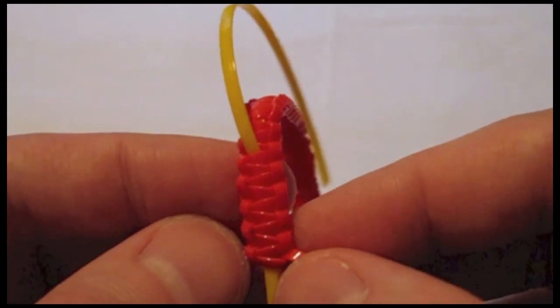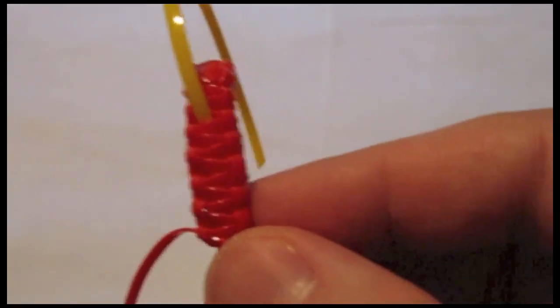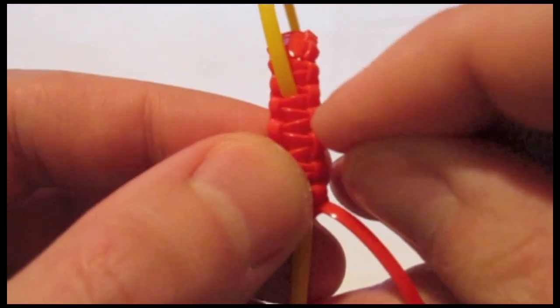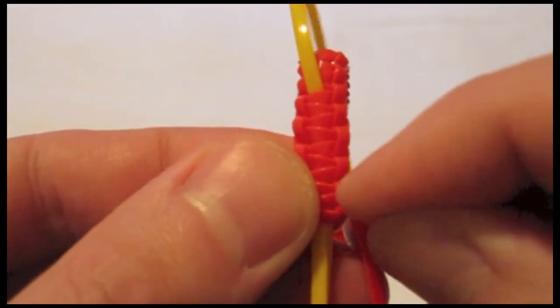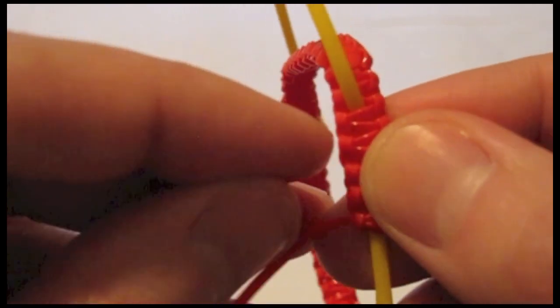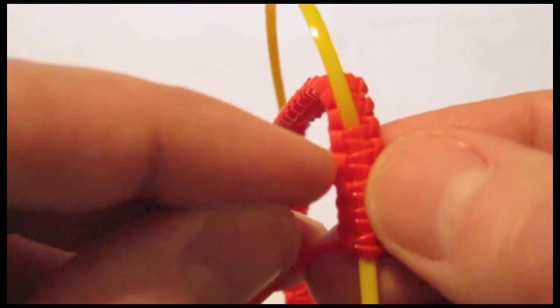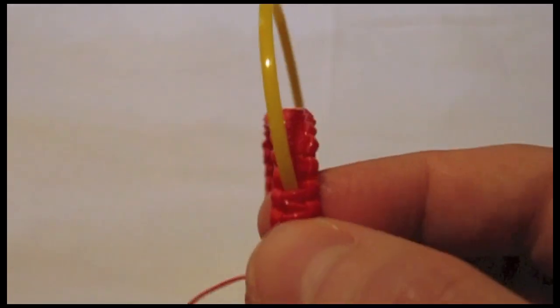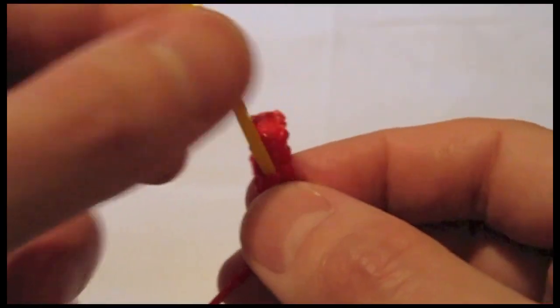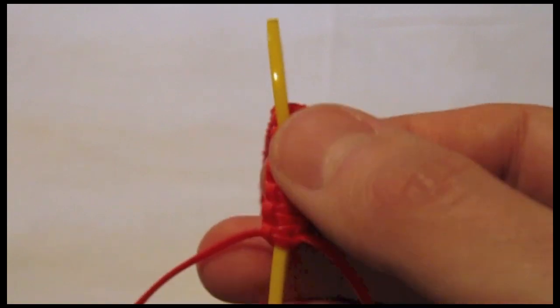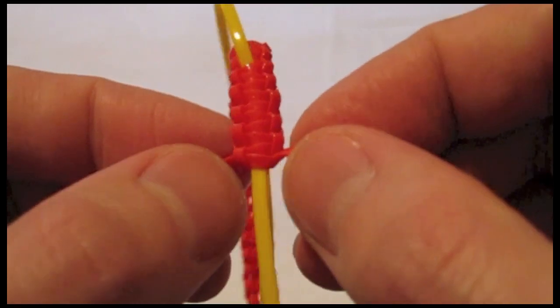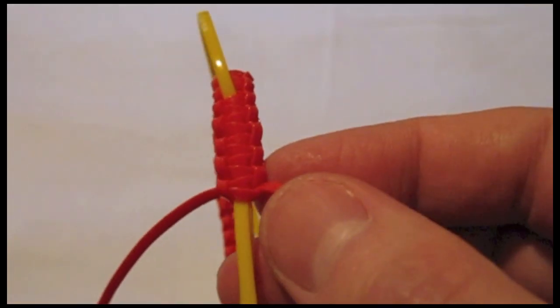I've done 10 stitches. I can tell that by counting the loops on the sides: 1, 2, 3, 4, 5, 6, 7, 8, 9, 10. So 10 stitches below where this piece of gimp pops out. And now I'm ready to superglue these 2 strands so that I can cut them off.